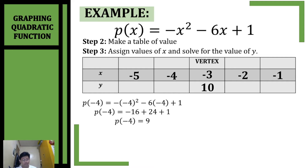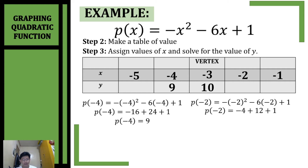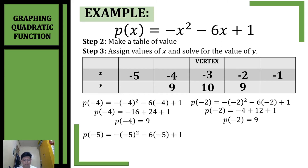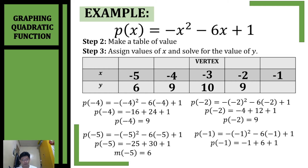Simplifying and combining like terms, y if x is negative 4 will be 9. Substituting negative 2 into our function, simplifying and combining like terms, the answer is also 9. Substituting negative 5, simplifying and combining like terms, we get 6. Substituting negative 1, simplifying and combining like terms, we also get 6. Now that our table of values is complete, it is time to plot our points.